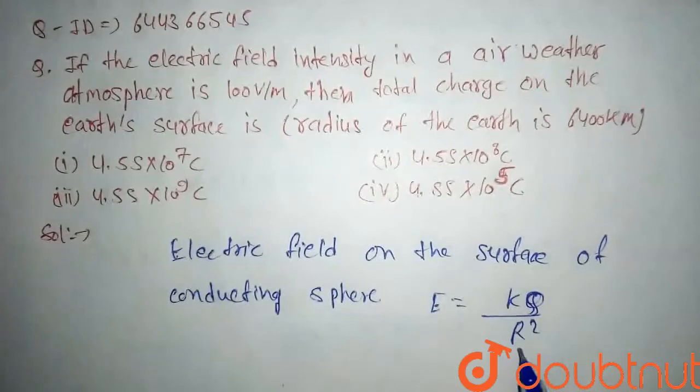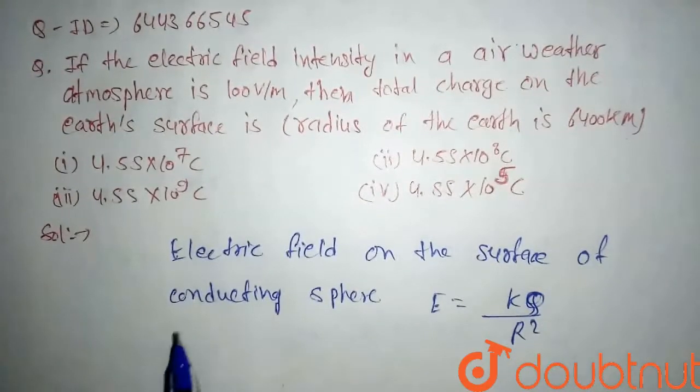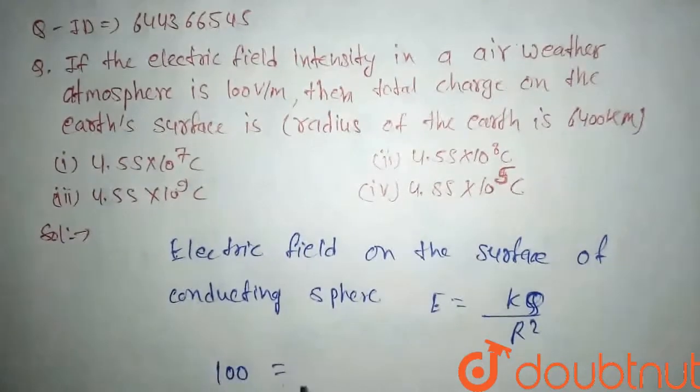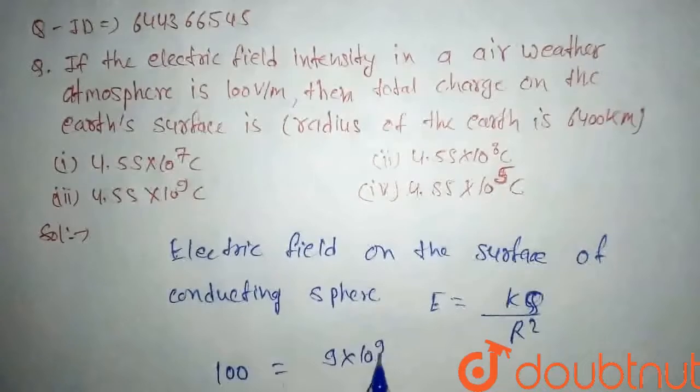Here R is radius of sphere. So if we put the value, we have 100 volt per meter. Also the value of k is given by 9 into 10 to the power 9. So here we have to find value of charge, so we will put values.